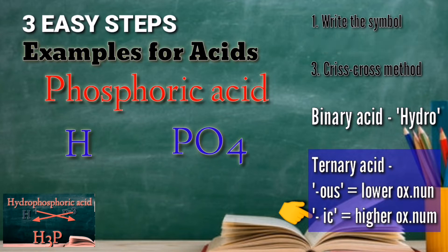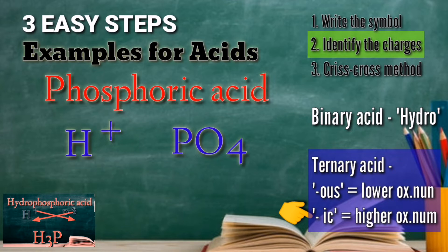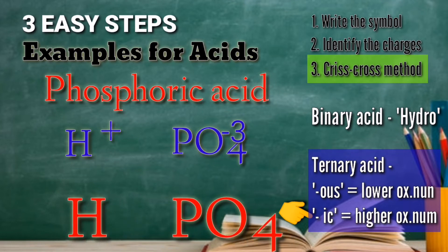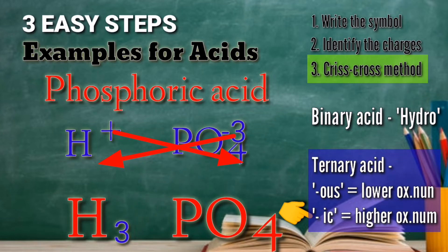Let's proceed with step 2: identify the charges. Hydrogen is positive 1 and our phosphate is negative 3. Look at your periodic table to verify these values. For step 3, perform the criss-cross method — we exchange the charges. The negative 3 becomes the subscript of hydrogen, and the positive 1 of hydrogen becomes the subscript of phosphate.